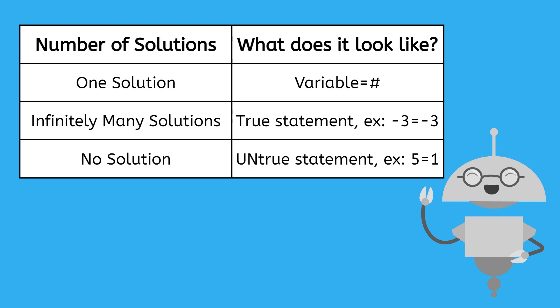When it comes to determining how many solutions an equation has, it's important to simplify everything so that you can compare the variable terms and the constant terms on each side of the equation. You may be able to tell how many solutions it has from the start, but as you saw with me, it's always a good idea to fully solve it to make sure that you're not missing anything important, like a negative sign.